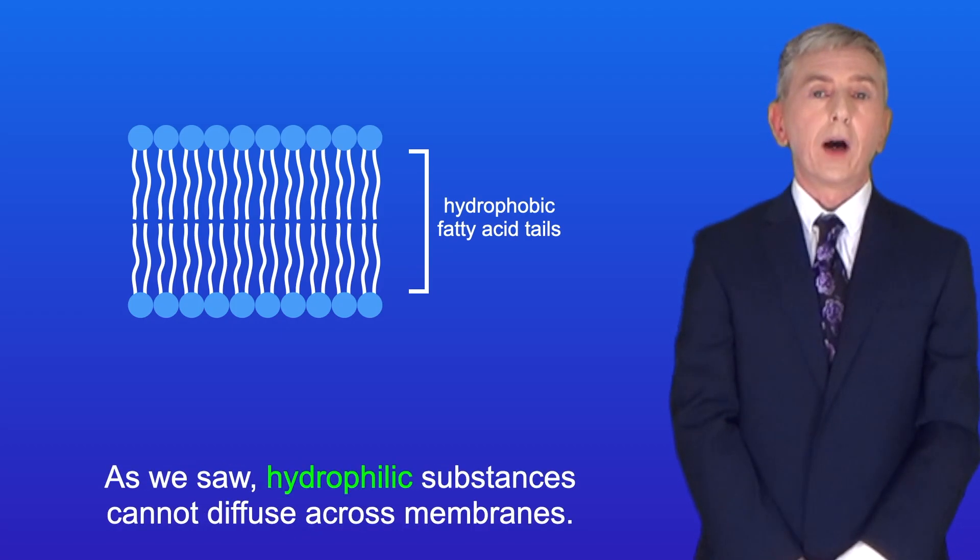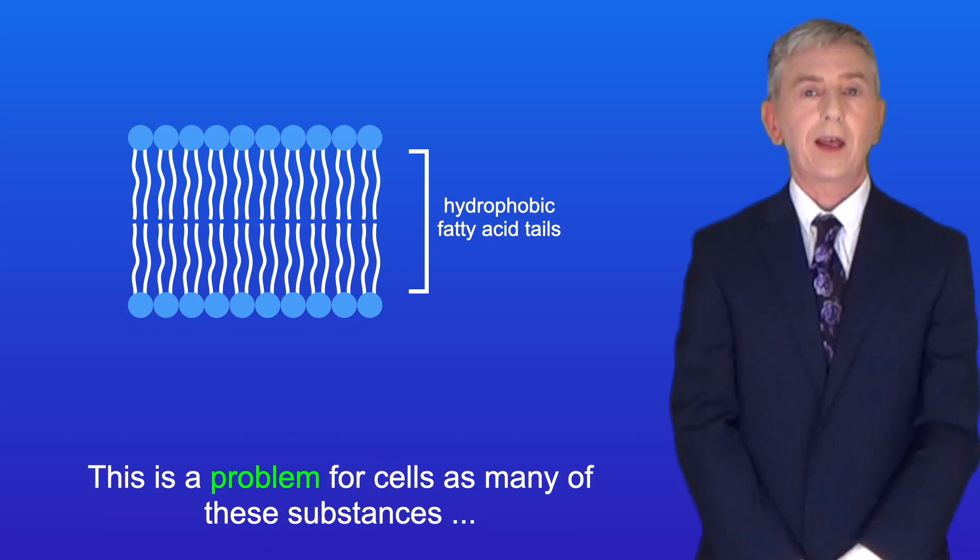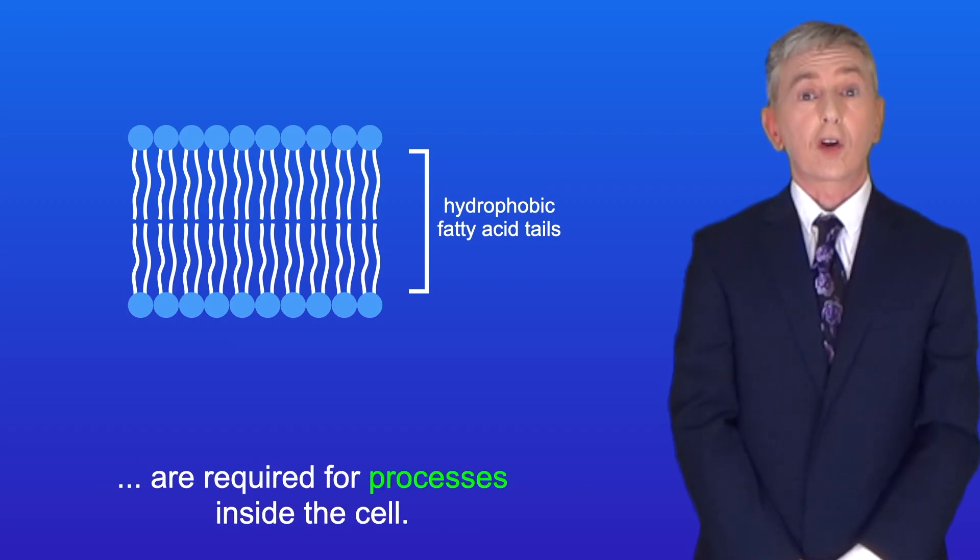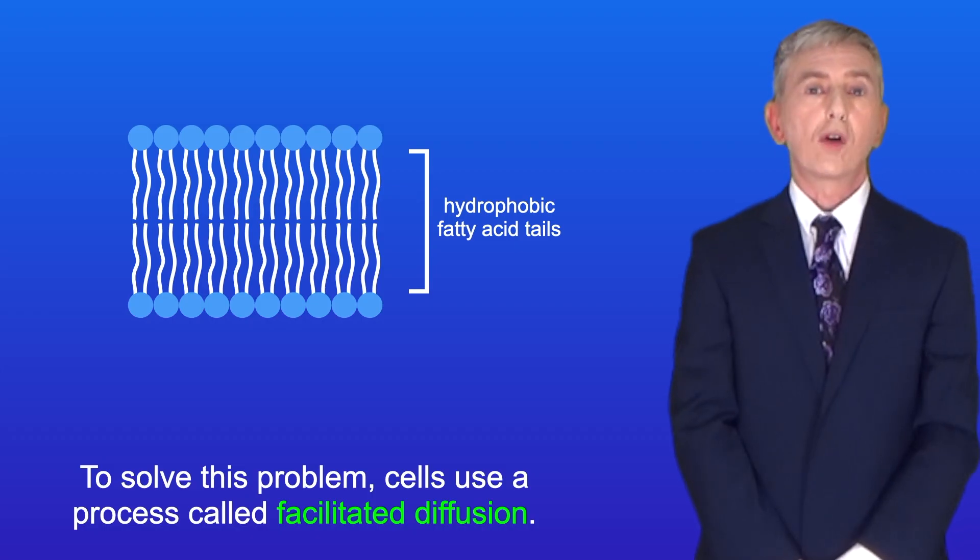So as we saw, hydrophilic substances cannot diffuse across membranes. Now this is a problem for cells, as many of these substances are required for processes inside the cell. So to solve this problem, cells use a process called facilitated diffusion.